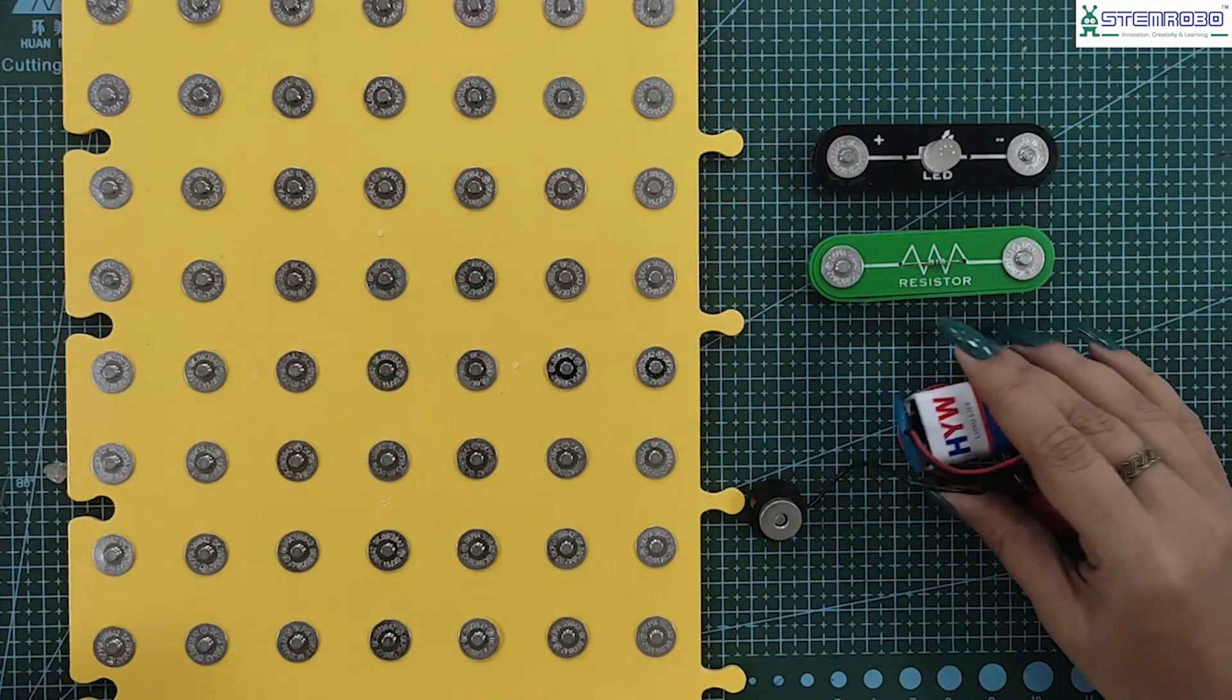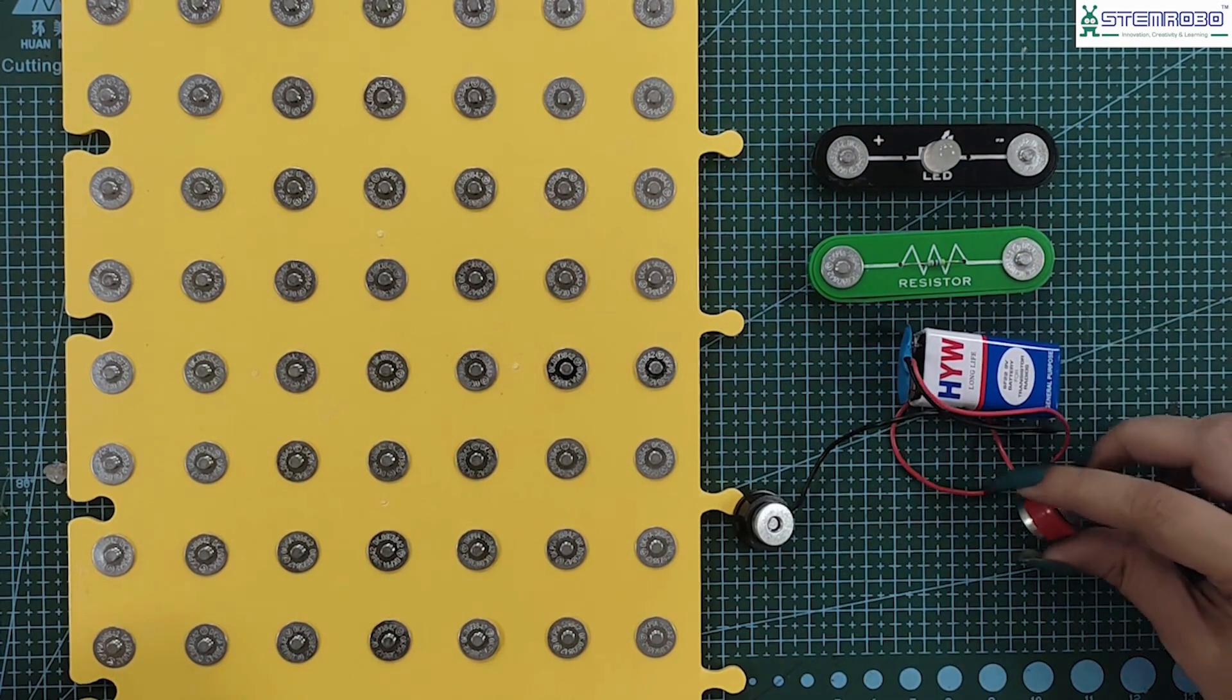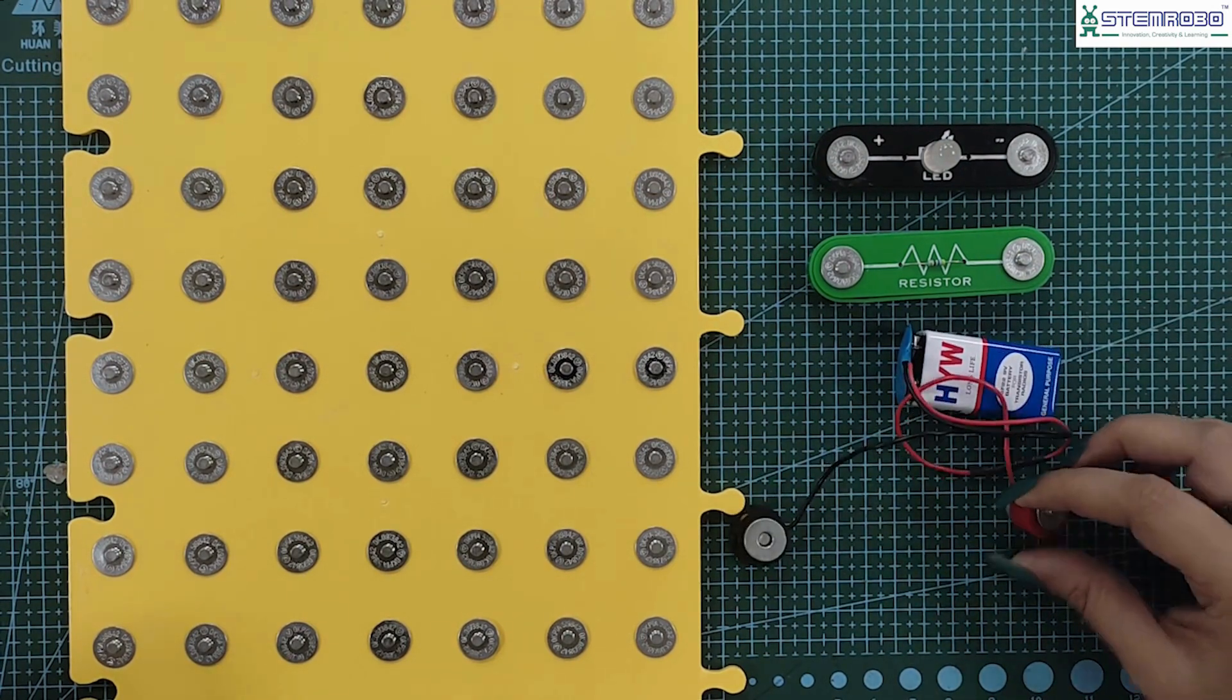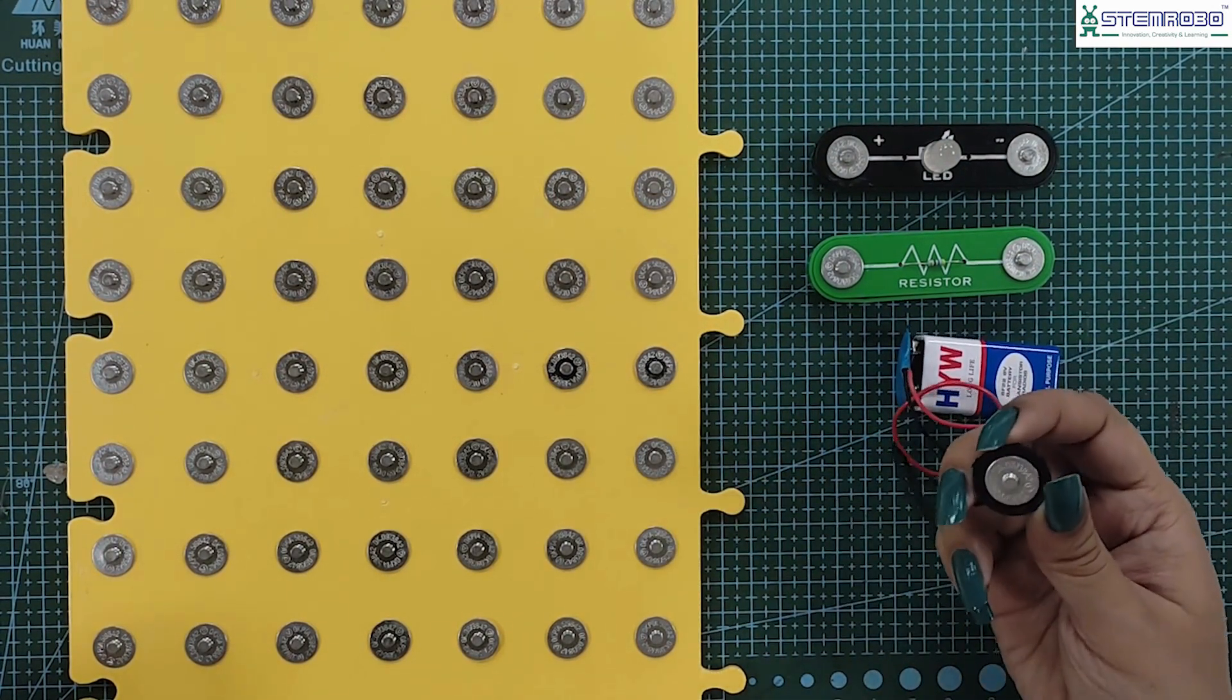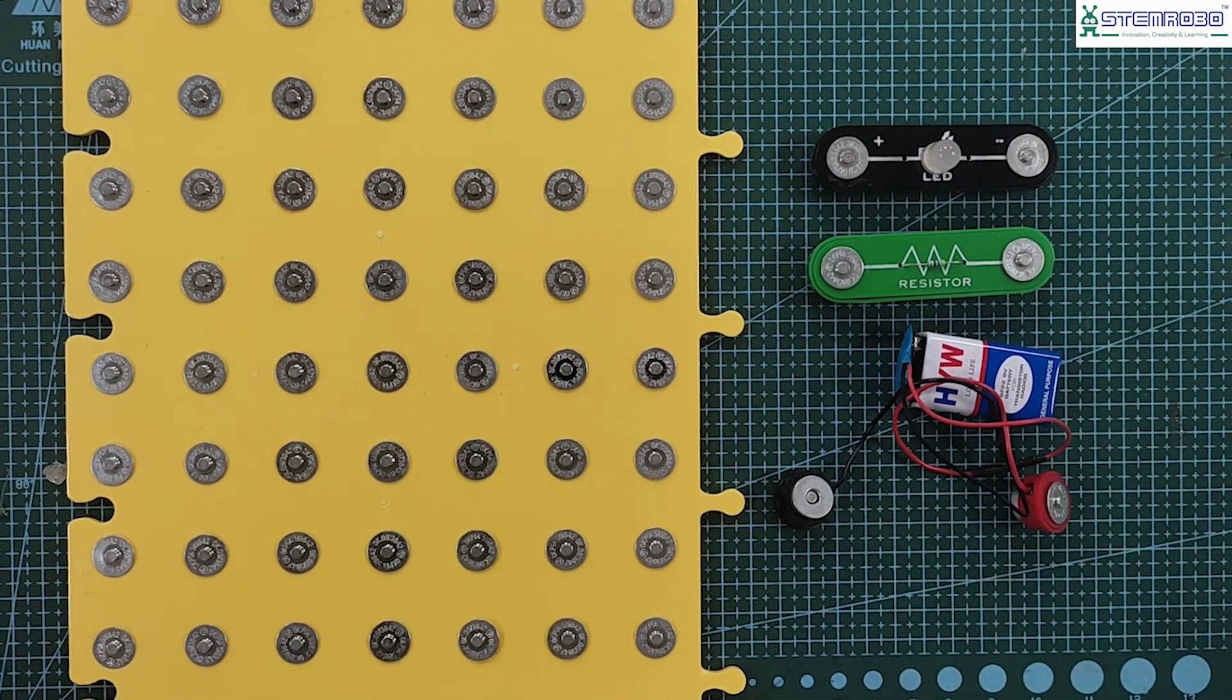Then we will be using the 9 volt battery which has two terminals: the positive terminal in red and the negative terminal in black to supply power to the circuit. Now let us perform the activity.